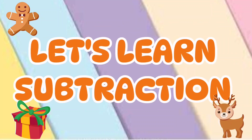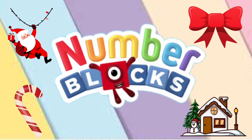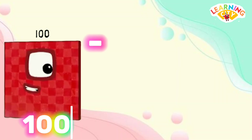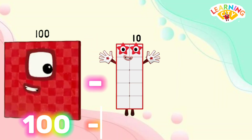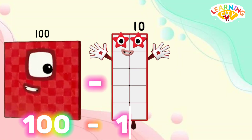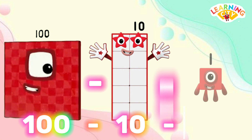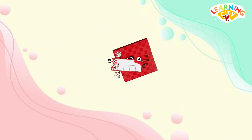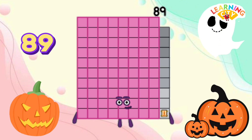Hi kids, let's learn subtraction using number blocks. 100 minus 10 minus 1 equals 89.